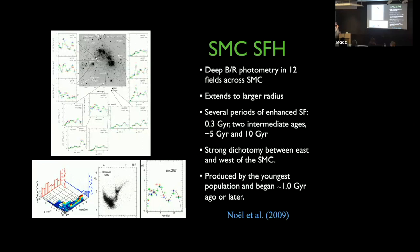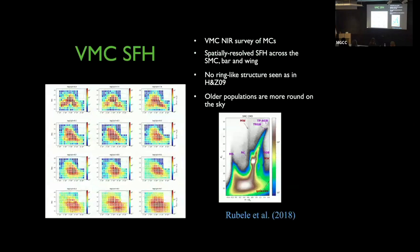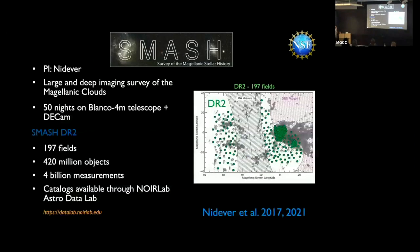We also have the VMC survey — a large near-infrared survey of the Magellanic Clouds — which produced spatially resolved star formation histories across a range of ages from youngest to oldest. Zaritsky found a ring structure in the SMC not seen in the VMC data. The older populations appear much more regular and round, while the younger populations show more irregular shapes.